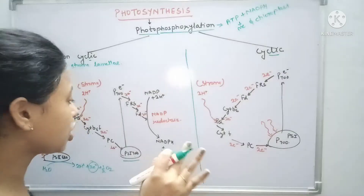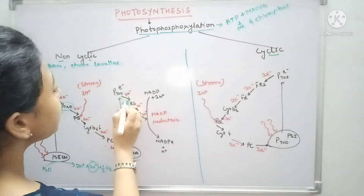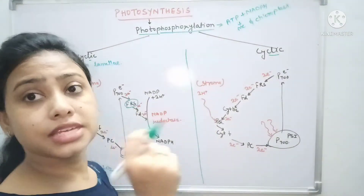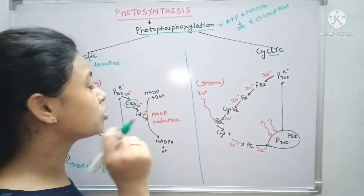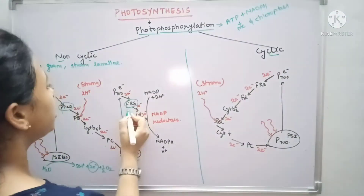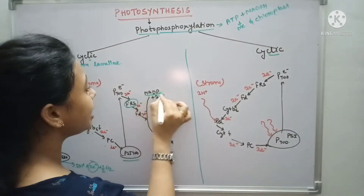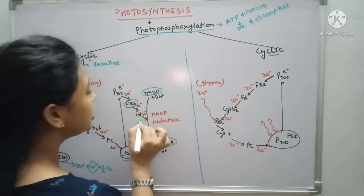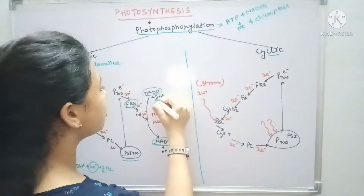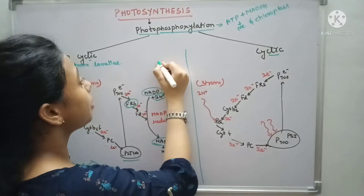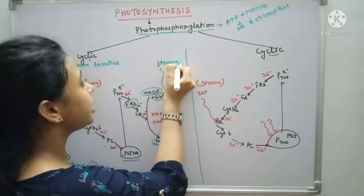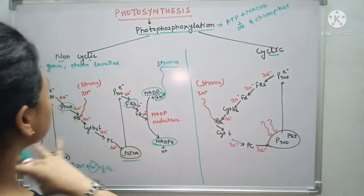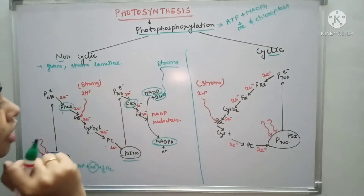Ultimately the electron reaches Photosystem I, which absorbs light maximum at 700 nanometers and gets excited. It then releases the electron into the FRS complex — ferredoxin reductase substance. It passes to ferredoxin, and ultimately NADP gets reduced into NADPH by taking electrons as well as hydrogen from the stromal region. This completes the non-cyclic process.